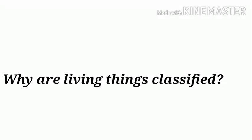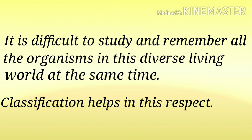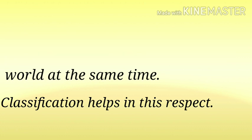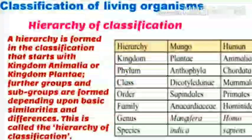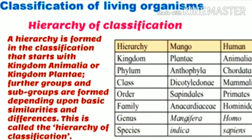Now why are living things classified? Living things are classified because it is difficult to study and remember all the organisms in this diverse — diverse means different — living world at the same time. Different scientists have used different criteria and independently classified plants and animals. A hierarchy is formed in classification that starts with Kingdom Animalia or Kingdom Plantae. Further groups and subgroups are formed depending upon basic similarities and major differences, such as differences in food habits or parts of the body. So these similarities and differences group organisms together, forming the hierarchy of classification.